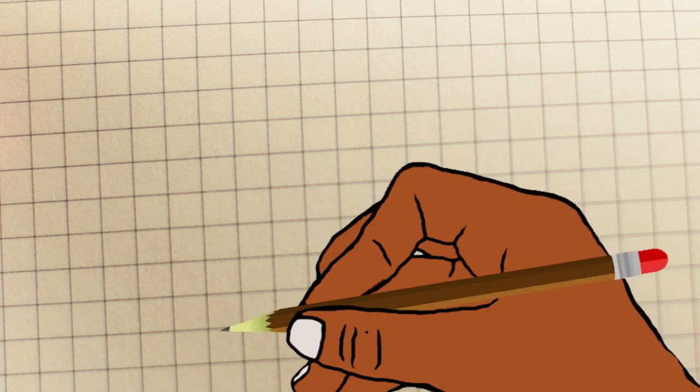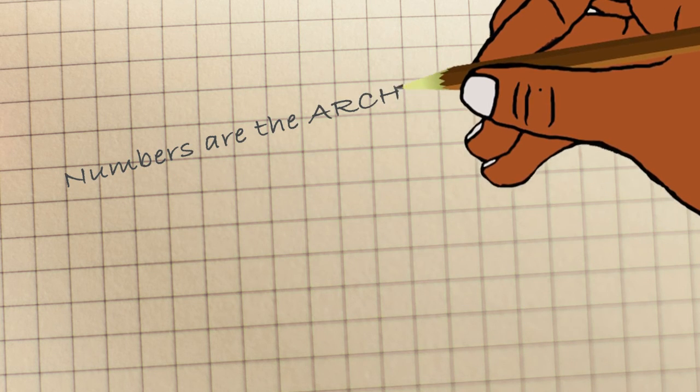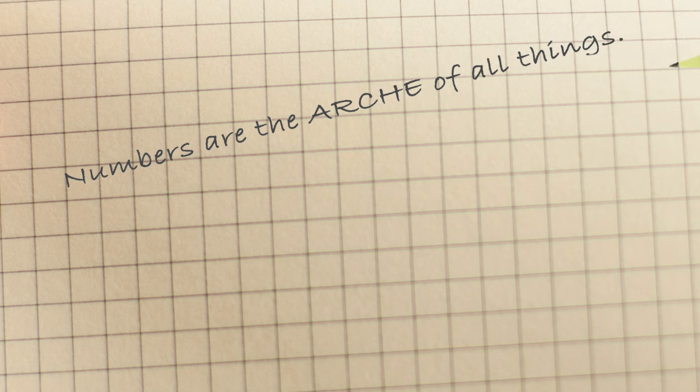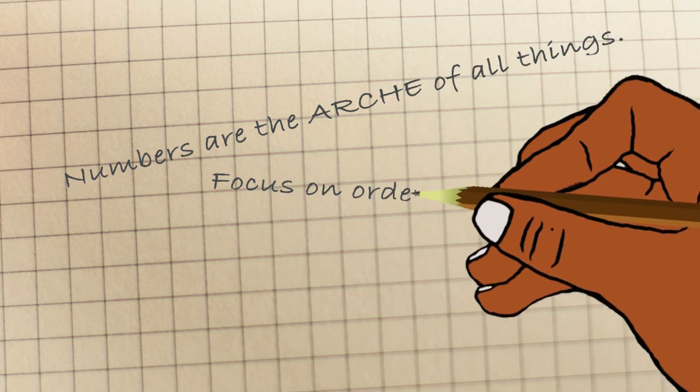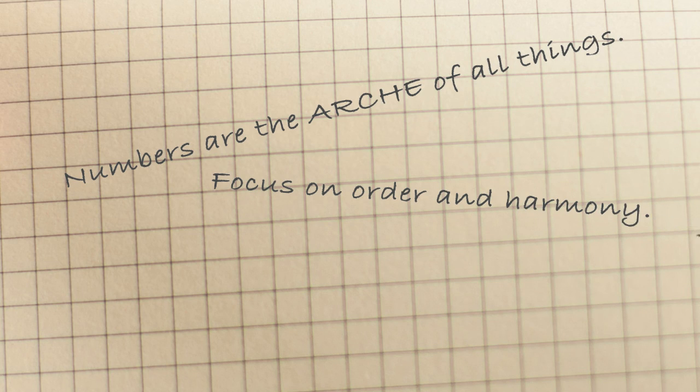To conclude, the Pythagoreans proposed numbers as the archaea of all things. They regarded numbers as the material element of all things. But they were also the first philosophers to focus on the ideas of order and harmony in the world. This is where numbers play an important role. The world can be expressed in mathematical relations.